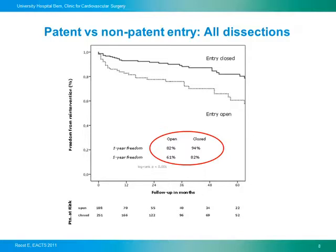Looking at the whole cohort, freedom from re-intervention is significantly influenced by whether the entry is closed or open. A closed entry gives a one- and five-year freedom from re-intervention of 94% and 82%, versus 82% and 61% respectively in the group with a still open entry.